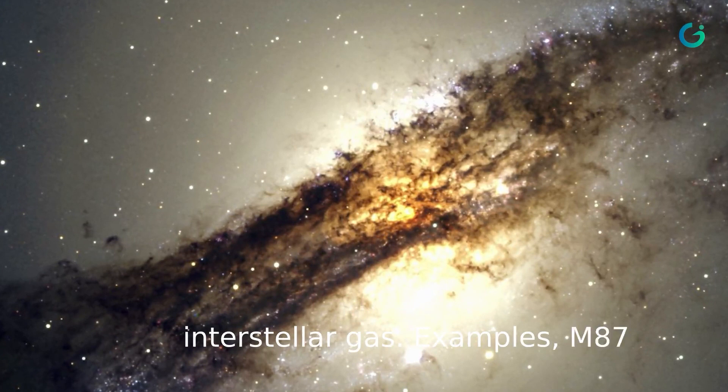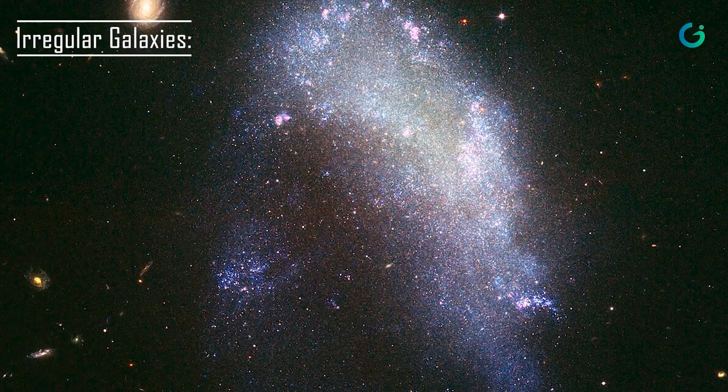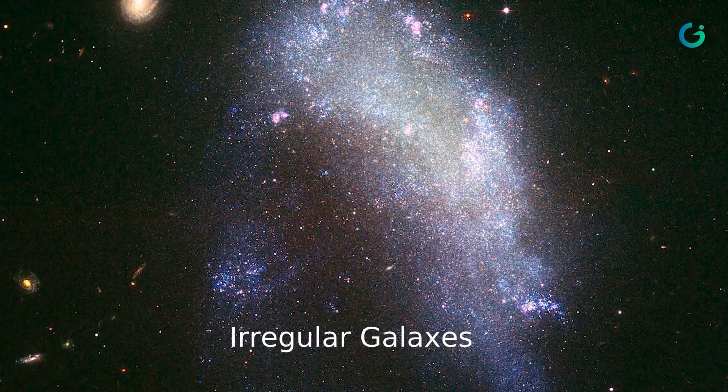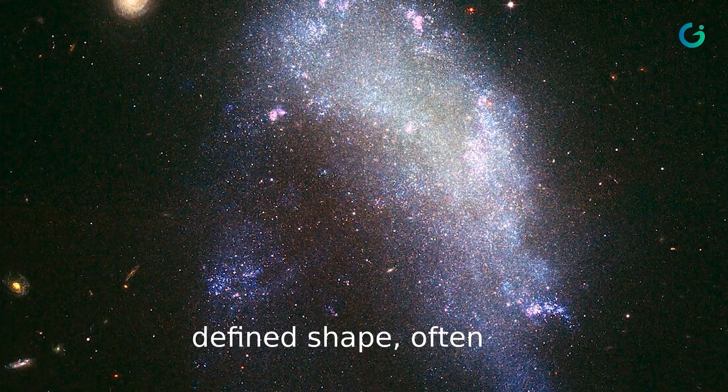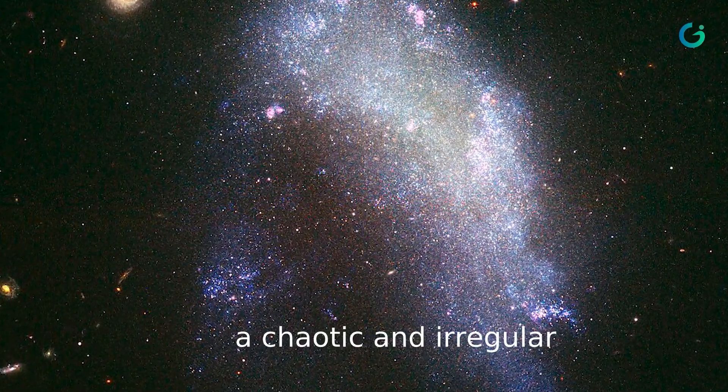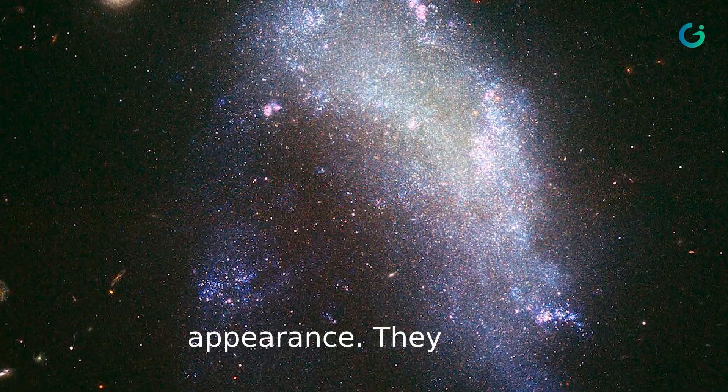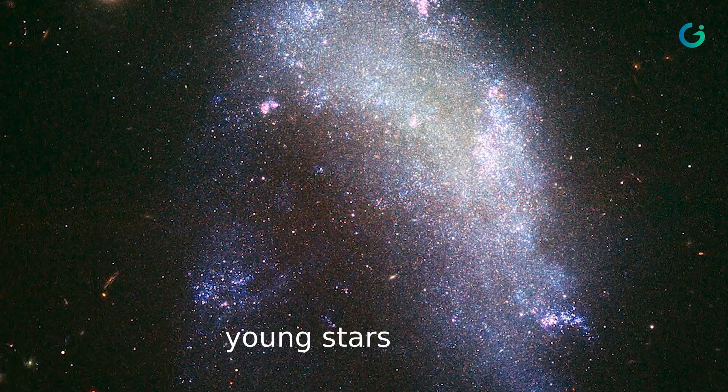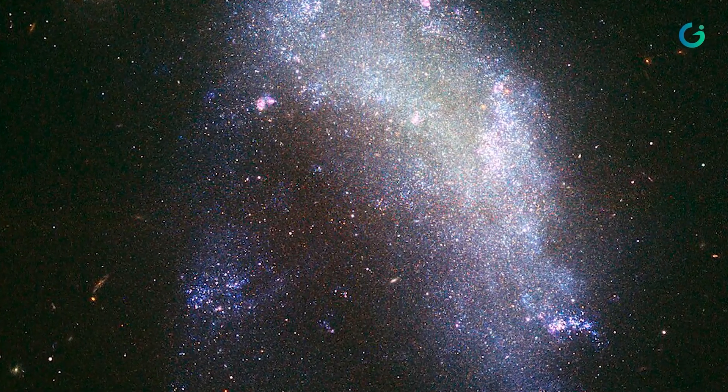Irregular galaxies lack a defined shape, often featuring a chaotic and irregular appearance. They may contain young stars and regions of active star formation. Examples include the Large and Small Magellanic Clouds.